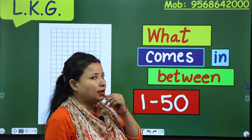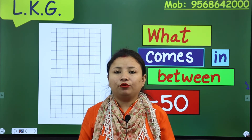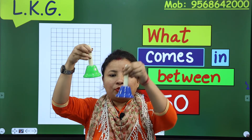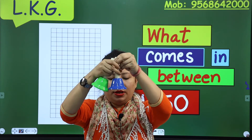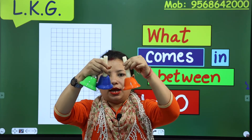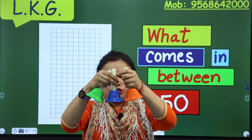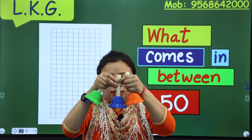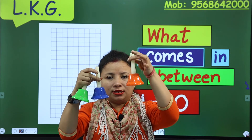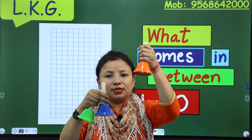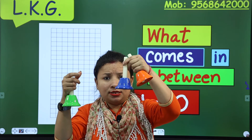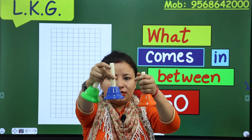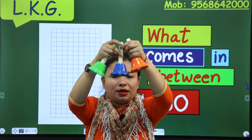Before starting my class, I have an example for you. Here is a green bell, here is a blue bell, and here is an orange bell. So here are three bells. This one is between — this is the first, this is the last, and this is between. So the blue color bell is in between.